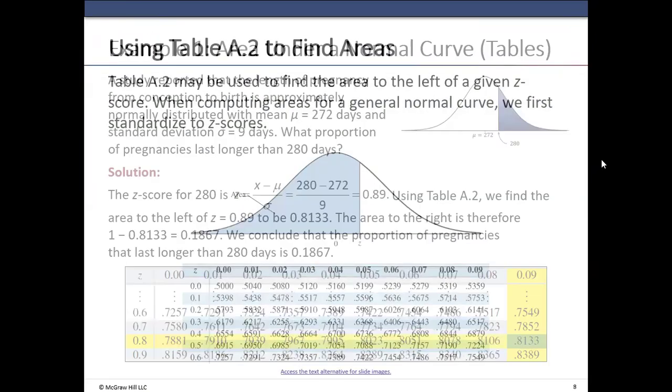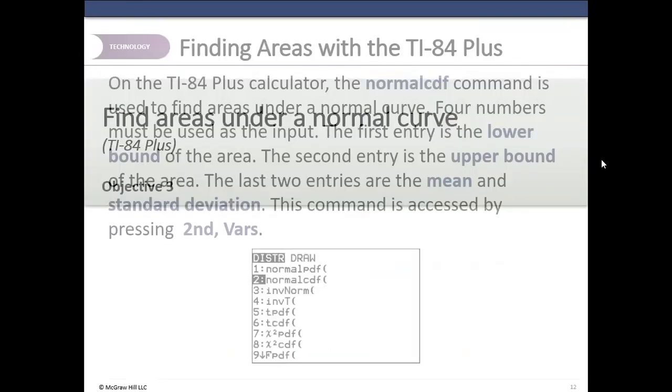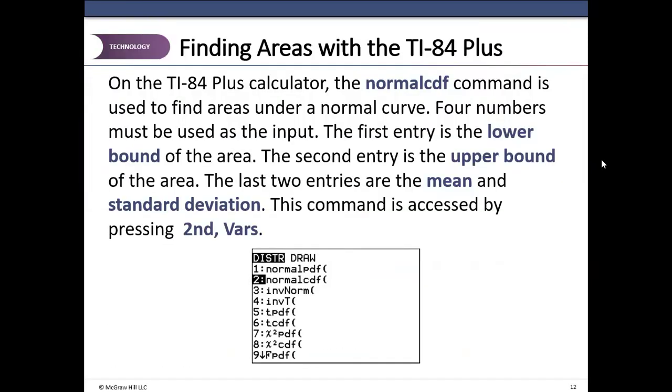We are not going to use the table. So let's forget that. So on TI-84 calculator, the normalCDF command is used to find areas under a normal curve. Four numbers must be used as input. The first entry is lower boundary. Second entry is upper boundary of the area. The last two entries are the mean and the standard deviation. The command is accessed by pressing second vars.